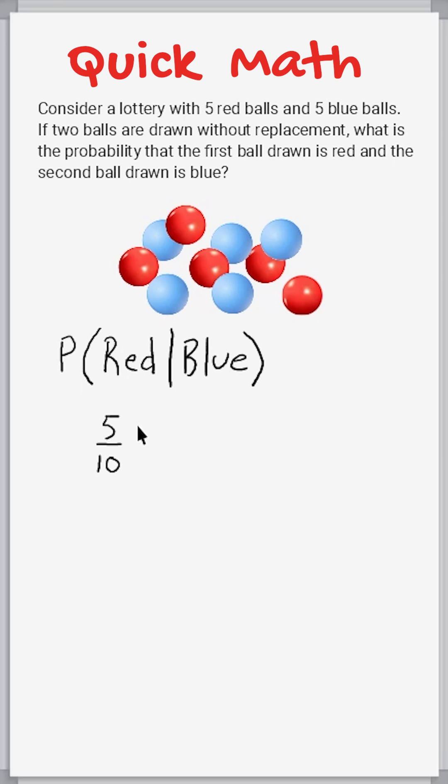Now let's assume that we were successful on this first selection, that we actually did select a red ball. That means on the second selection, there are a total of nine balls left, and out of those nine, five of them are blue.